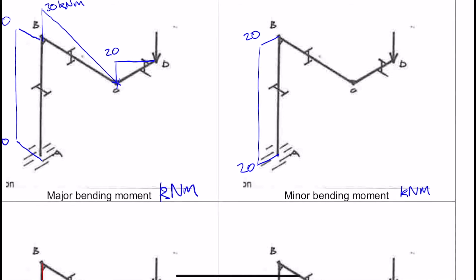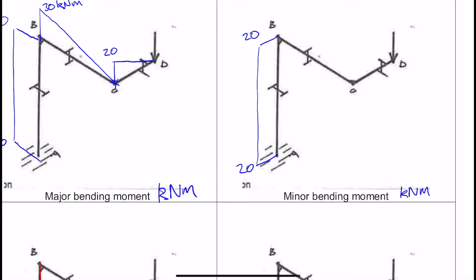We have no further minor axis bending moments because to get any minor axis bending for CD, the force has to travel in that sort of direction. So there's none of that. And similarly for BC, there needs to be force in that direction for minor axis bending, which we don't have. So the minor axis bending for BC and CD is zero the whole way.